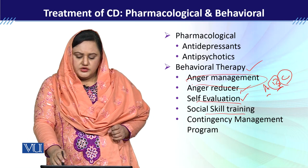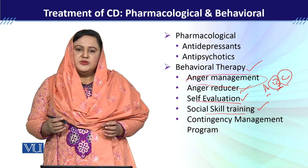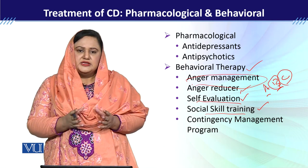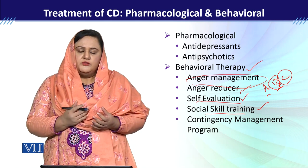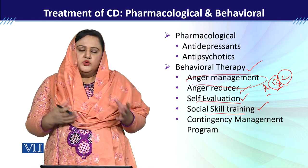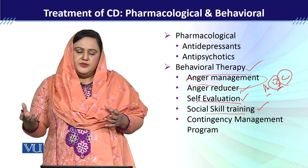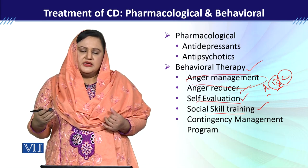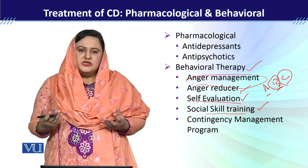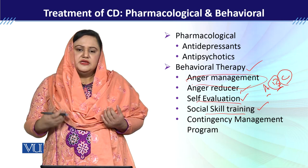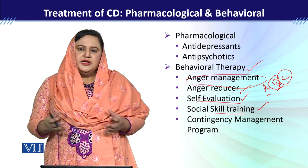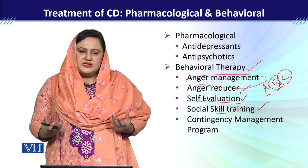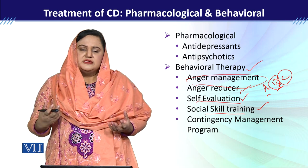Then social skill training is given to these children, because they have social skills deficits. Children are mostly given role play — they are taught how to communicate with their friends. The therapist can play the role of a friend, and the child exchanges dialogues with them, through which the therapist teaches the child how to have better communication. For social skill training, group therapy can also be recommended, where the child is engaged with other children in different activities and taught how to work in a team, bear others' points of view, and work in a congenial environment.